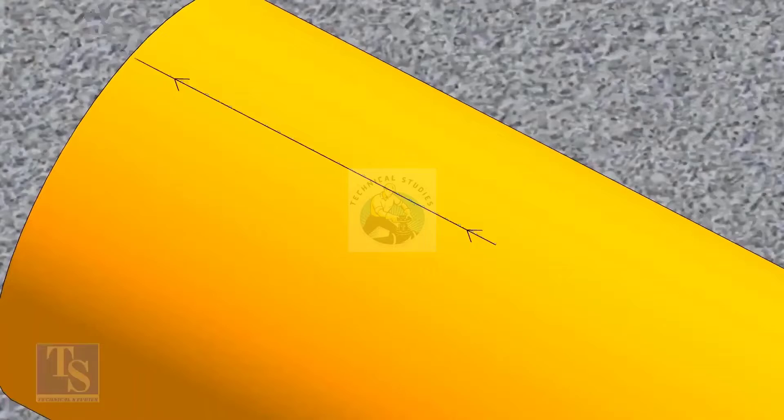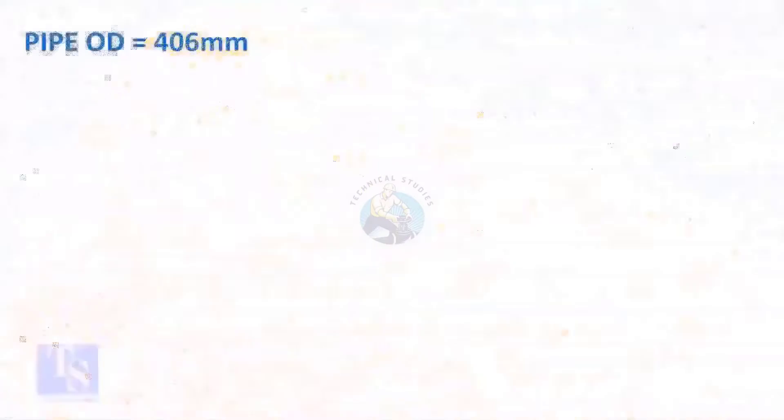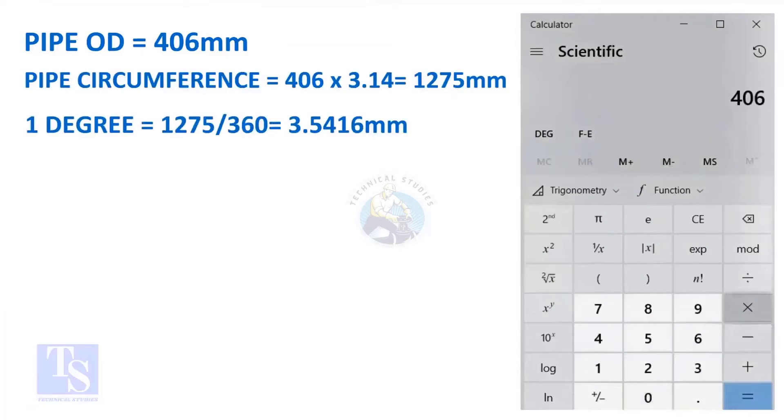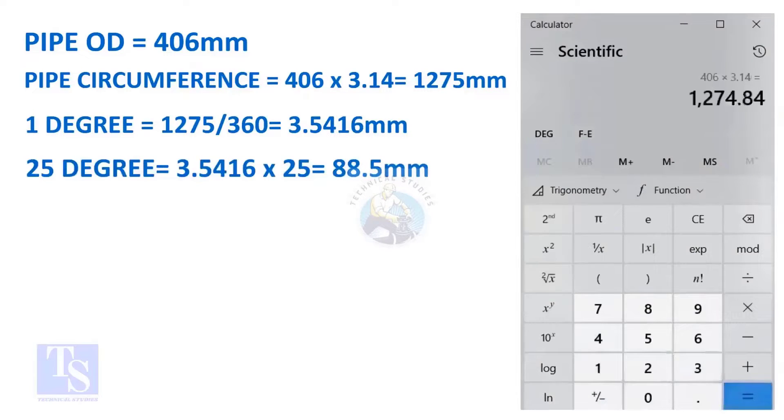Let us calculate the circumferential distance or arc length for 25 degrees. Multiply the OD by 3.14, you will get the circumference of the pipe. Divide the circumference by 360, you will get the arc length of 1 degree. And finally, multiply the 1 degree arc length by 25. Now you have the arc length of 25 degrees. You can apply this formula to get the arc length of any degree.